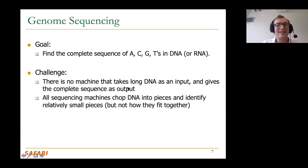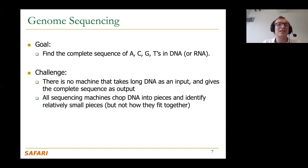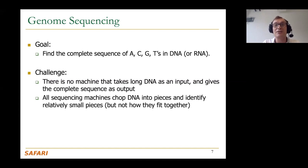All sequencing machines today chop DNA into pieces and identify relatively small pieces, but they don't tell you how those pieces fit together. It's essentially a puzzle: where do these pieces fit? You want to reconstruct your entire DNA or at least a good chunk of it to answer questions. Some machines give you pieces only 300 base pairs long, but human DNA is 3.2 billion base pairs, so with 300 you cannot do much.